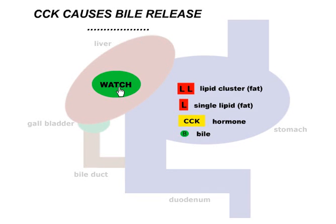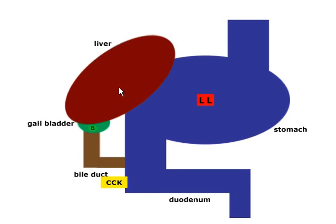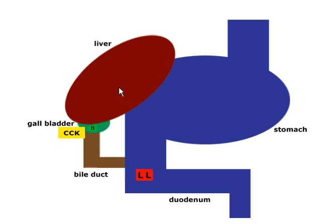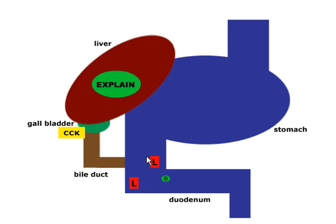So let's watch the animation. The lipids are in the stomach, they come down and rub the wall of the duodenum. The hormone CCK travels through the blood to the gallbladder. Bile comes out and splits the large lipids into small ones, and now these small lipids can be acted on effectively by lipase. The action of bile there, doing the splitting part, is called emulsifying the lipids.